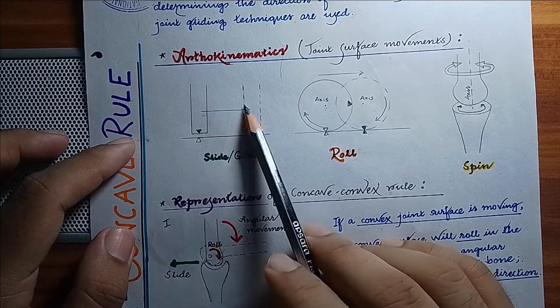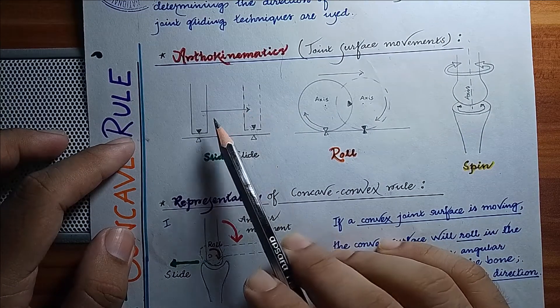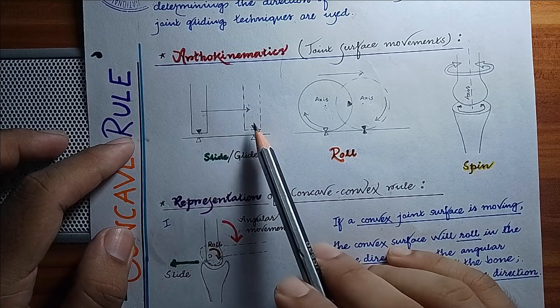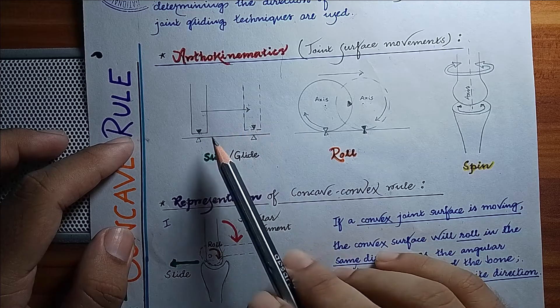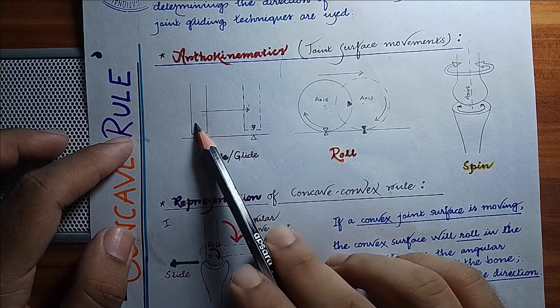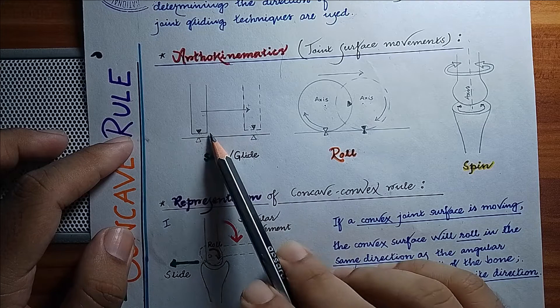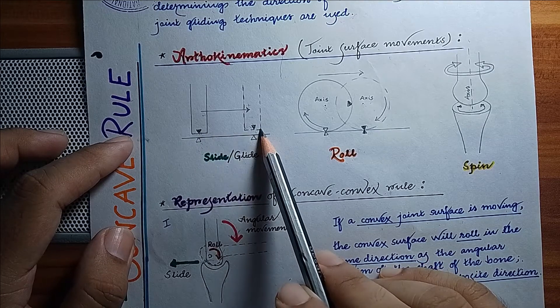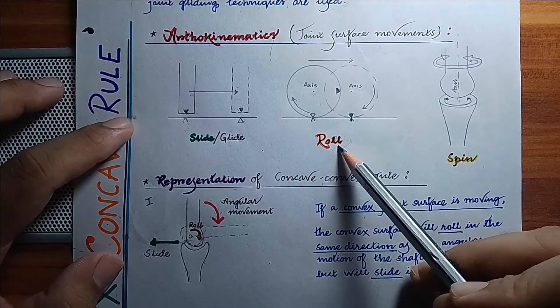All points on the moving surface travel the same amount of distance. The second joint surface movement is roll. A roll is a rotatory motion in which new points on the moving joint surface come in contact with new points on the opposing surface.